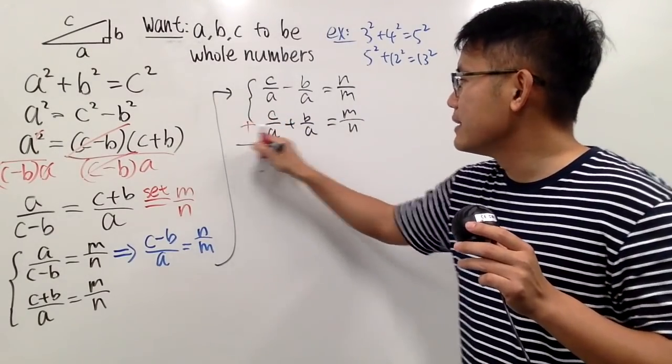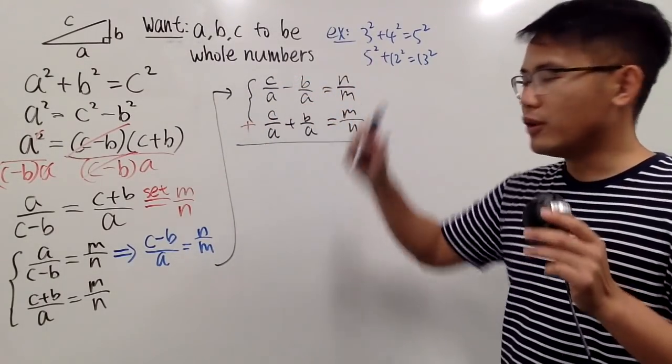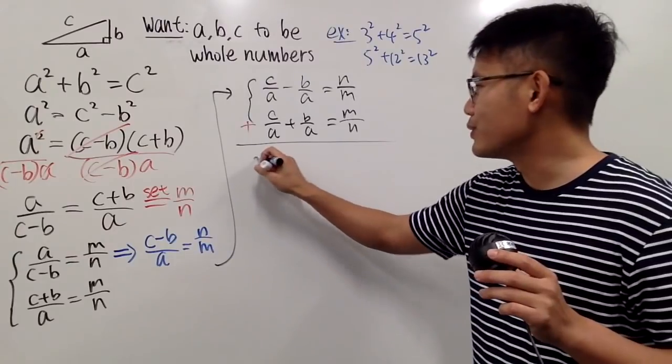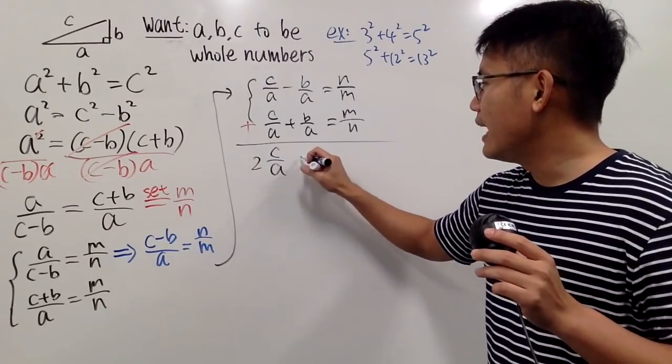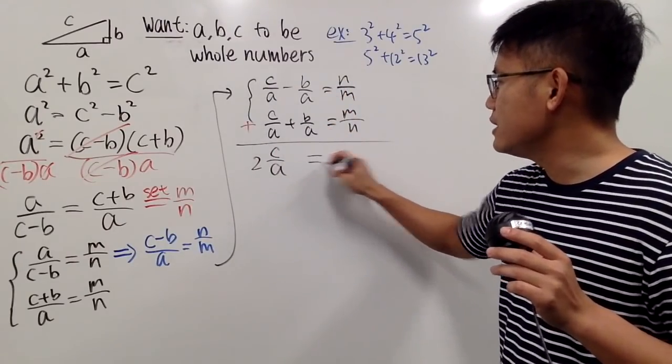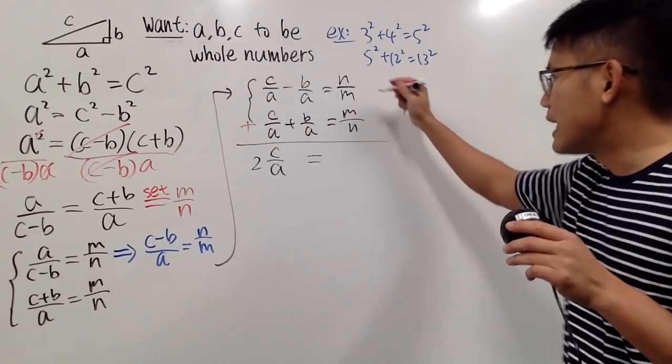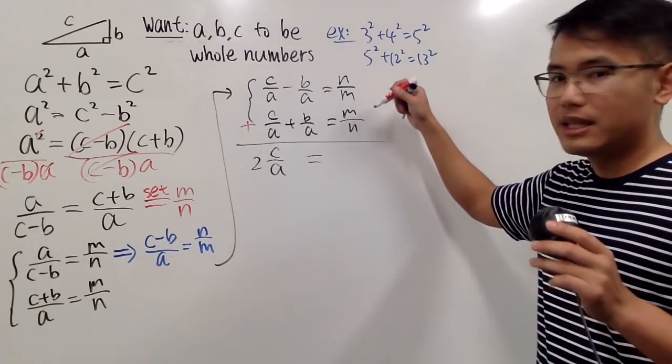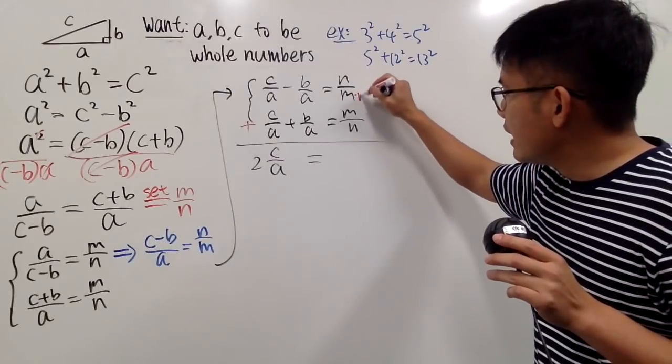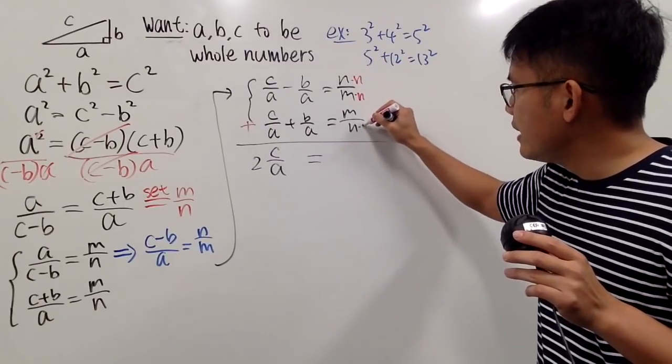I can just add these two equations up together and I can cancel them out. Right? So let's do that. We add C over A plus C over A. It's of course just two of them. So 2C over A. And this and that will be gone. So this is equal to, I'm going to add this up. And of course, I will just get a common denominator first. Let me multiply the N and N here and the M and